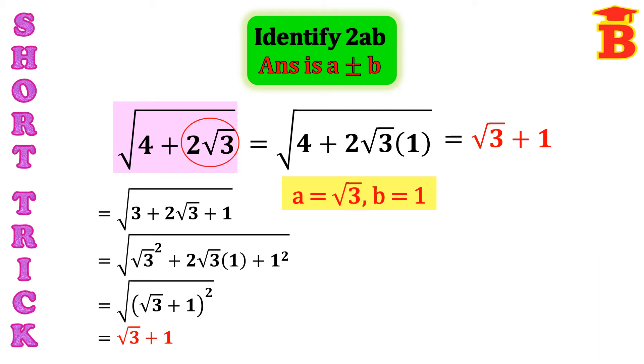So, this is what the exact mathematical steps. But using the short trick, we write the answer A plus B immediately. So, identify the term 2AB. Once we identify the term 2AB, from that we know the value of A, B. And we write the answer immediately. A plus B.